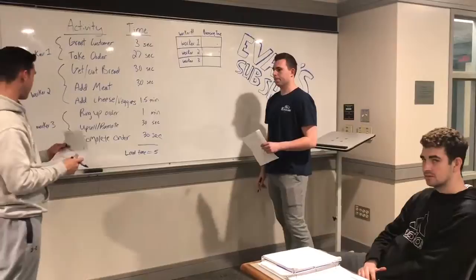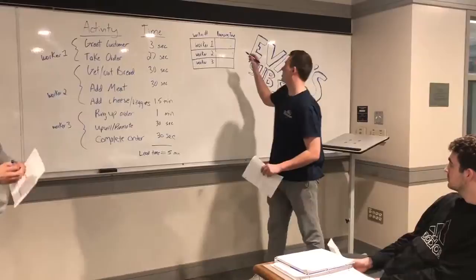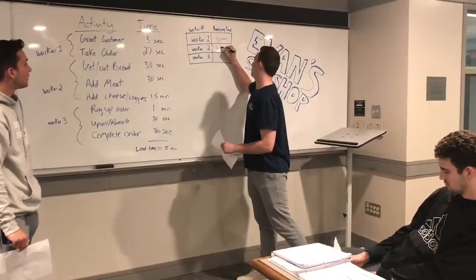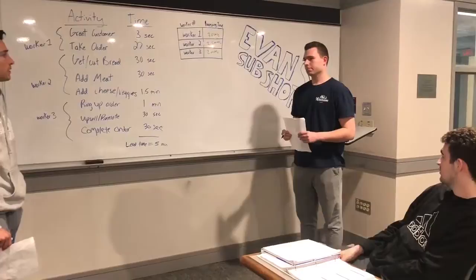The last part of the process, which is to complete the order, averages out to be 30 seconds. This gives us a lead time of five minutes. Given our analysis of the lead time, worker one's processing time is 30 seconds, worker two's is two and a half minutes, and worker three's processing time is two minutes. We think we have a bottleneck at worker two because it has the lowest capacity, so we have to try to reduce that somehow.